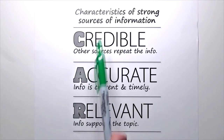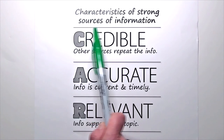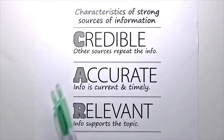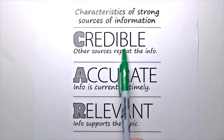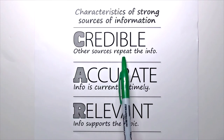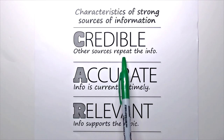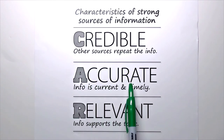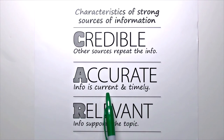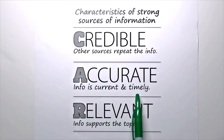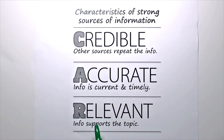It doesn't have information that's helpful. When introducing students to the characteristics of a strong source, I'll teach students the CAR acronym. It is Credible — in that other sources corroborate or repeat the information. It is Accurate — in that it is current, timely, and completely true. And it is Relevant — in that it supports the topic you are researching.